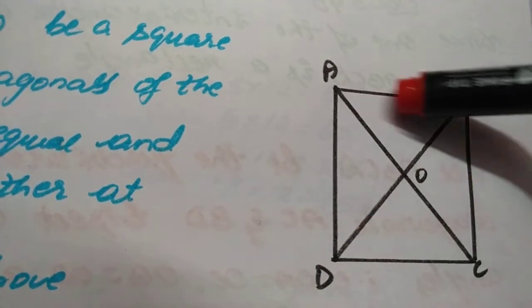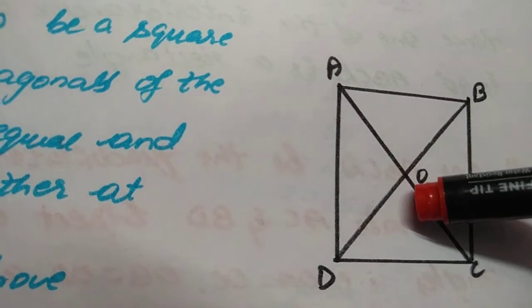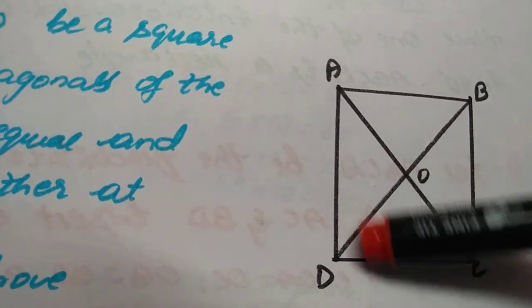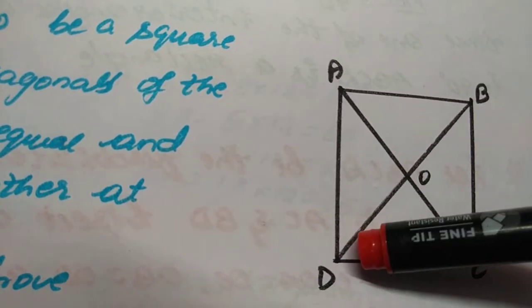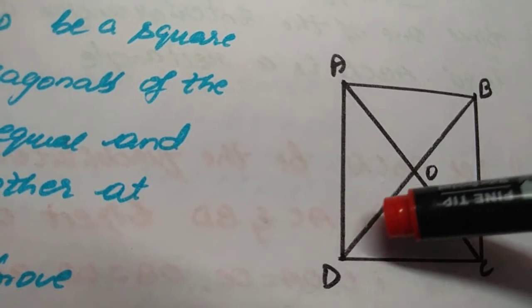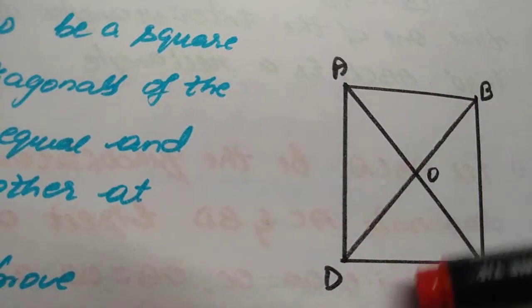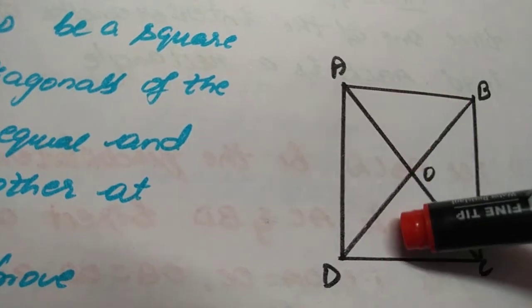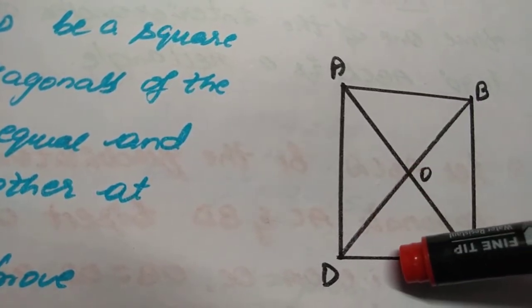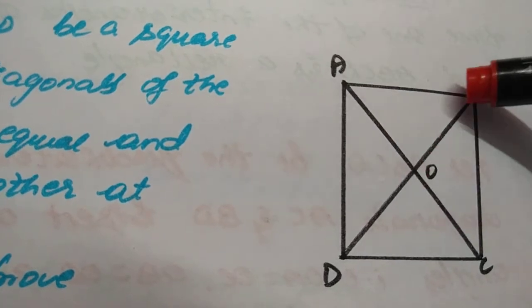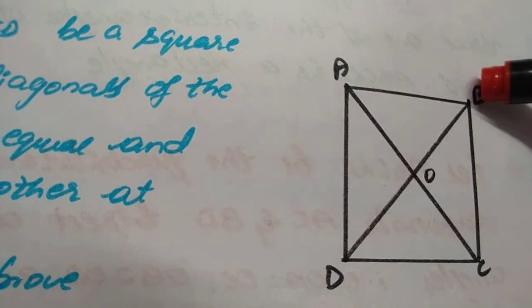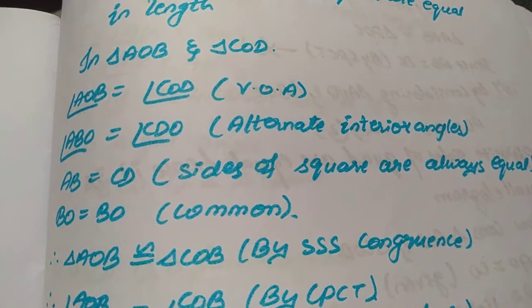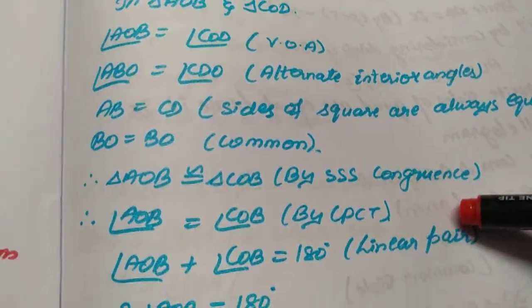Parallel means we know that alternate interior angles — that is the Z shape — angle ABO and angle CDO are alternate interior angles. So angle, side, angle of two triangles are equal, or we can say angle, angle, side: angle AOB, angle ABO, and side AB. That is what I have written. Hence, by AAS congruence, we can say the two triangles are congruent.